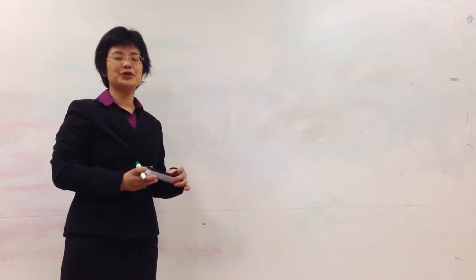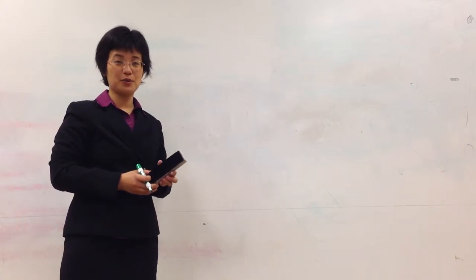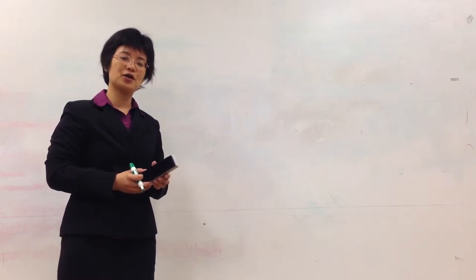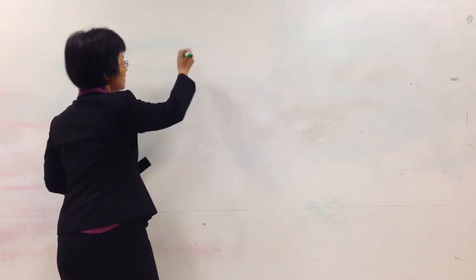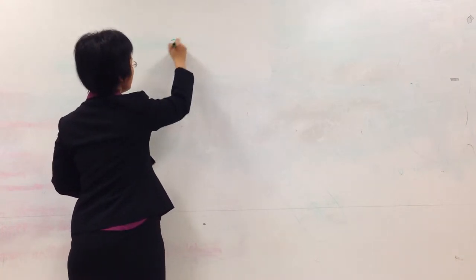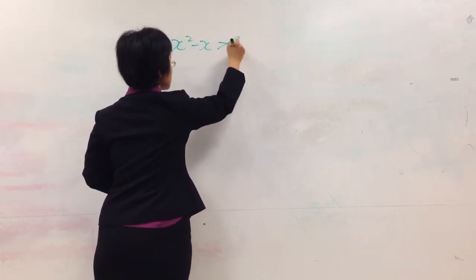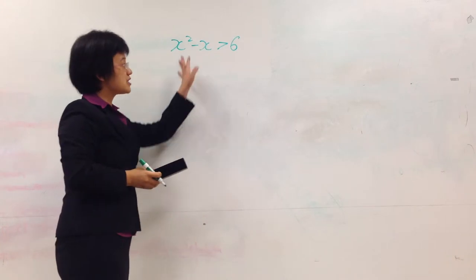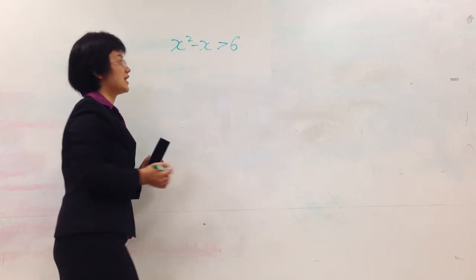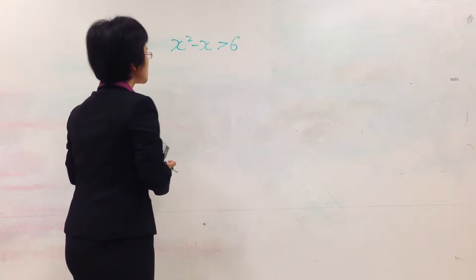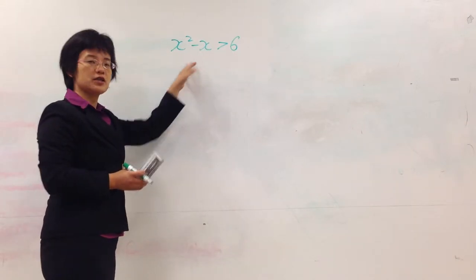Last time we learned how to solve the linear inequality. Today we're going to learn how to solve quadratic inequality. For example, if we have x squared minus x greater than 6, how to find a solution set for this inequality? We're going to follow several steps to find a solution set for this inequality.